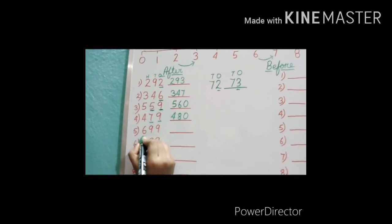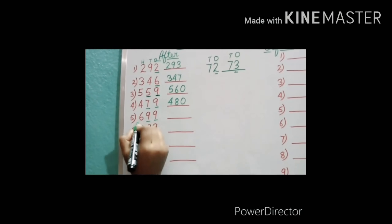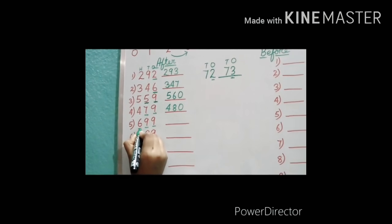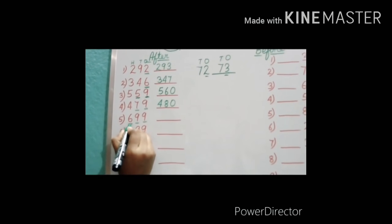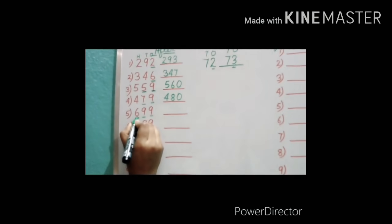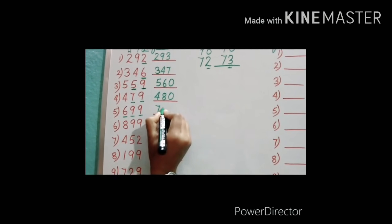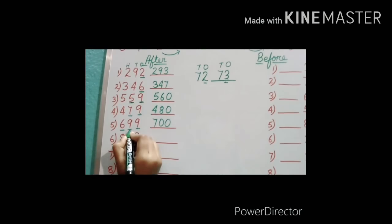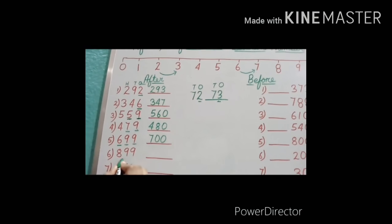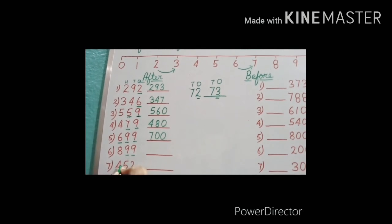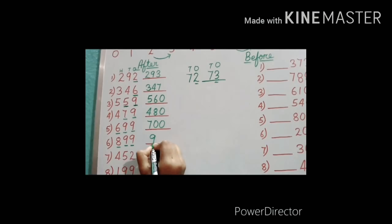Question number 5: ones place is 9 and tens place is also 9. So what will we do? We will change the hundreds place digit. When ones place is 9 and tens place is also 9, we change the hundreds digit. Here the hundreds digit is 6; after 6 is 7. So we write 700 — both 9s change to 0 and 6 becomes 7. Similarly, for 899: both digits are 99, so 899 changes to 900.